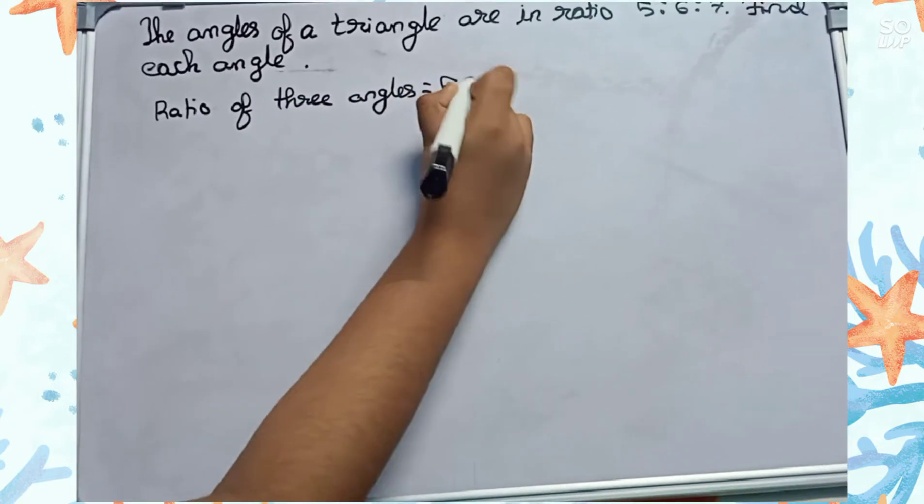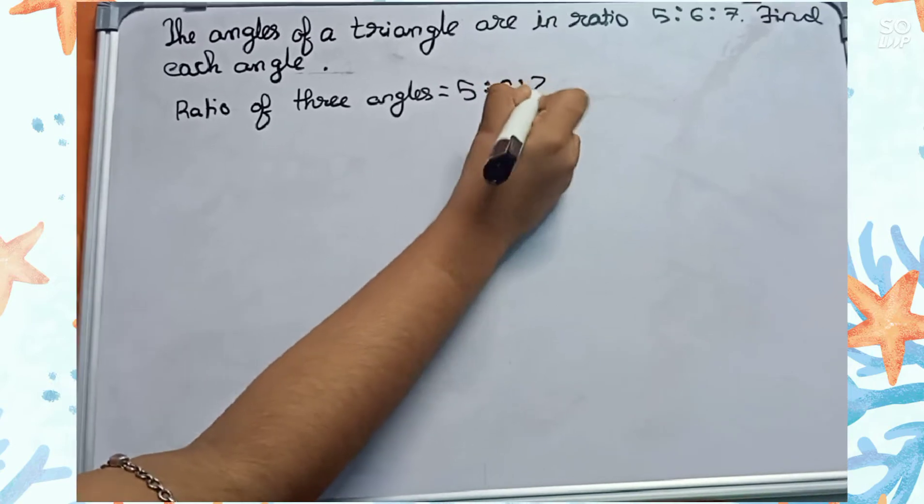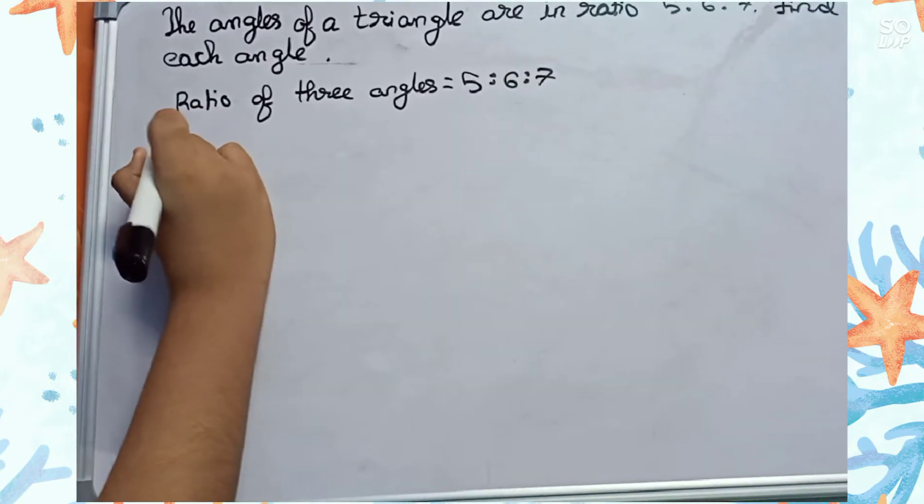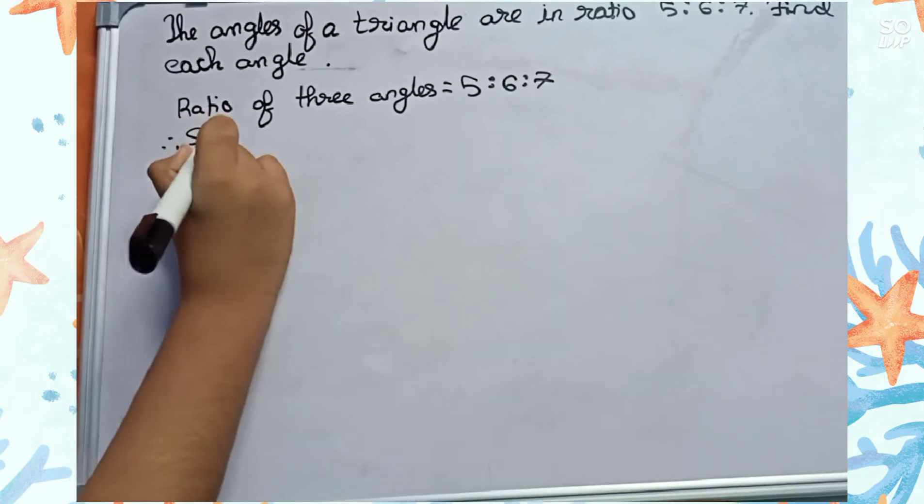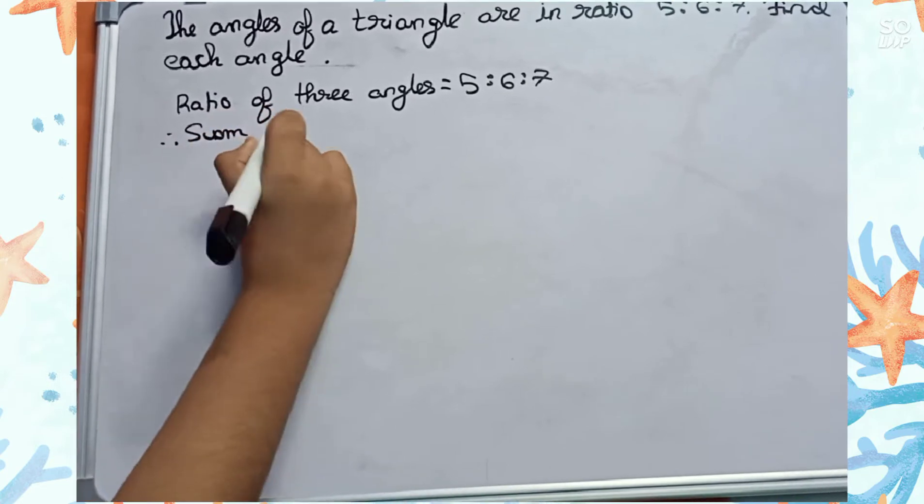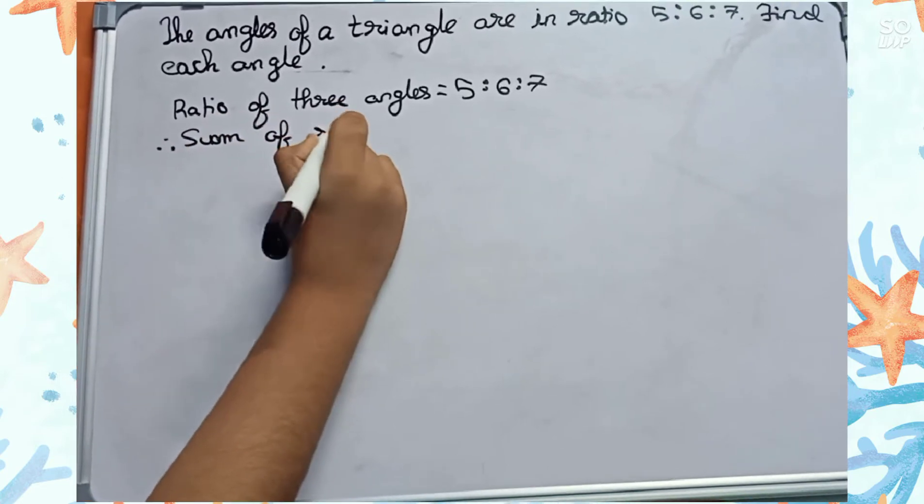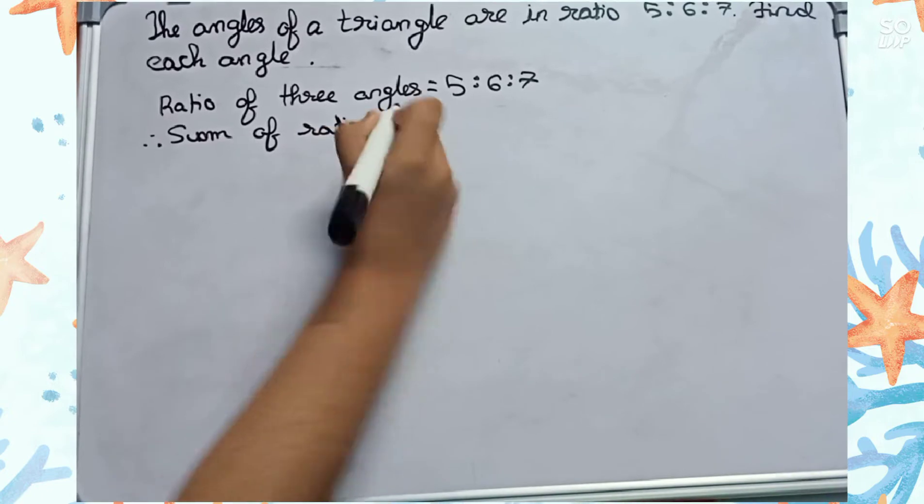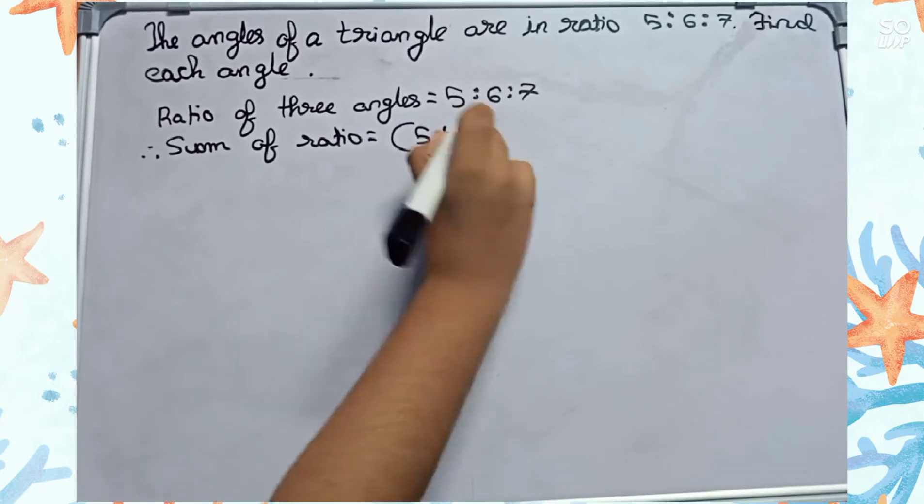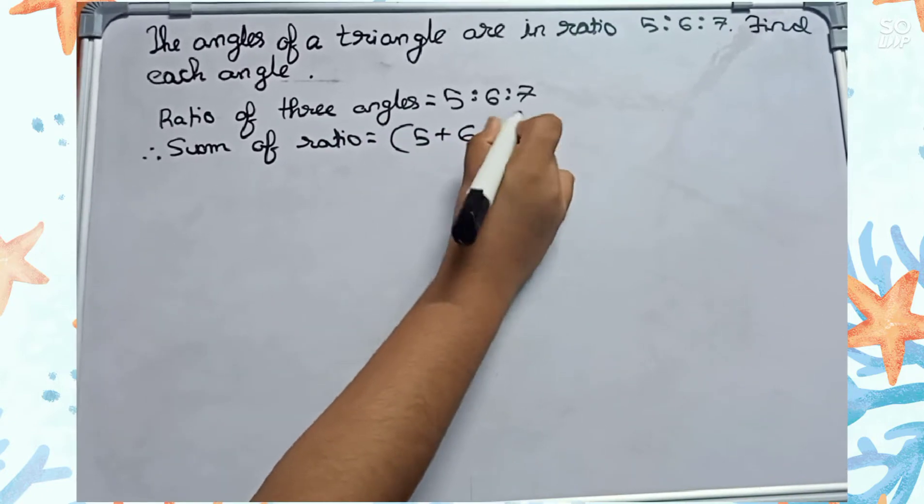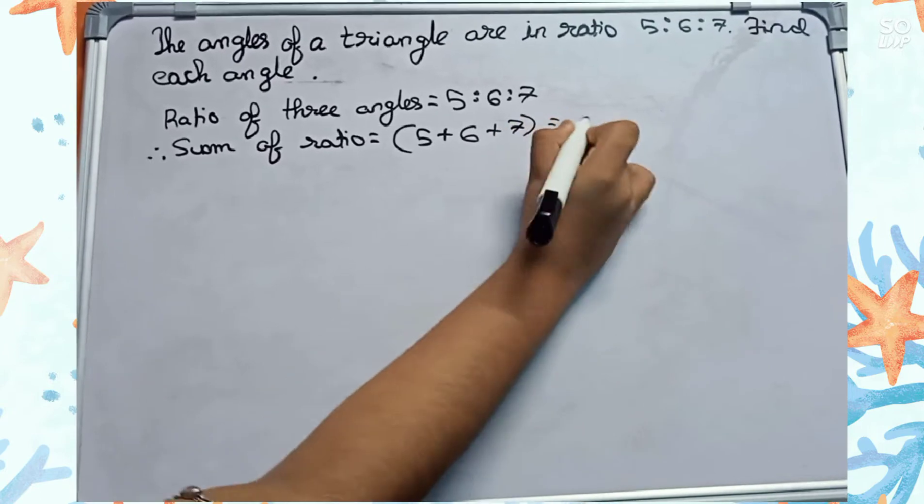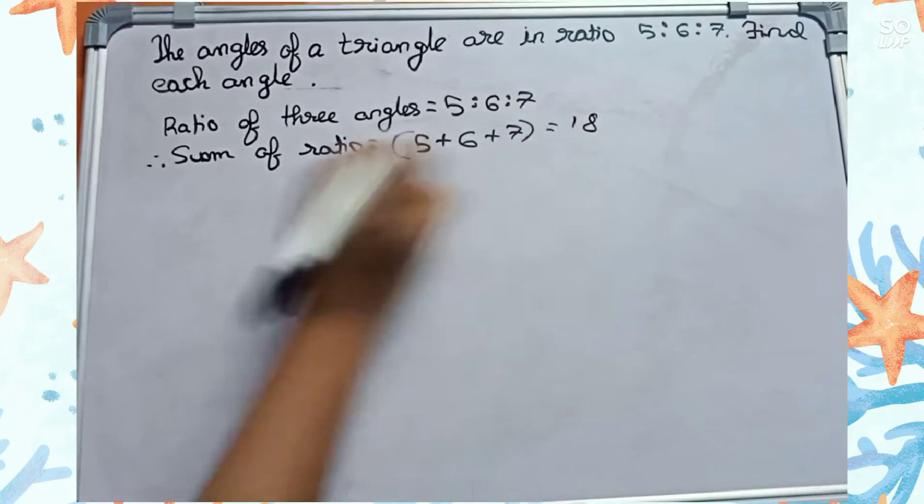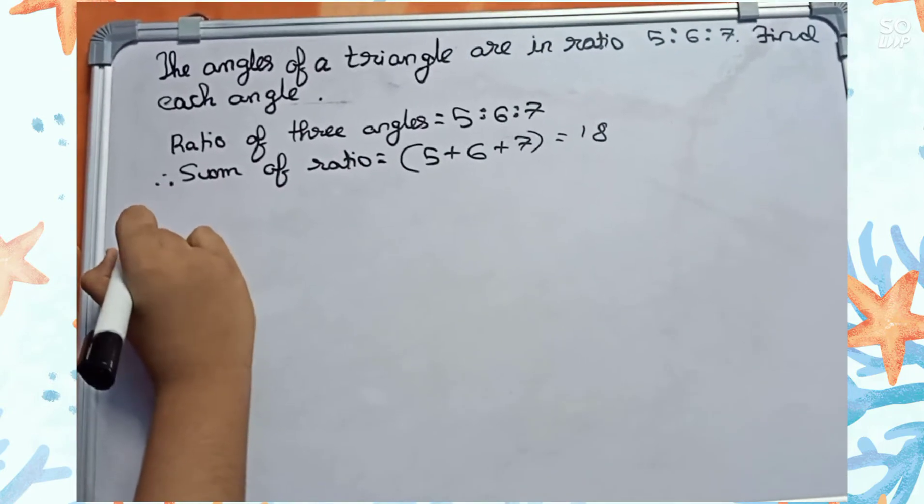Therefore I will find the sum of ratios. Sum of ratios equals 5 plus 6 plus 7 equals 18. Now find the first angle.